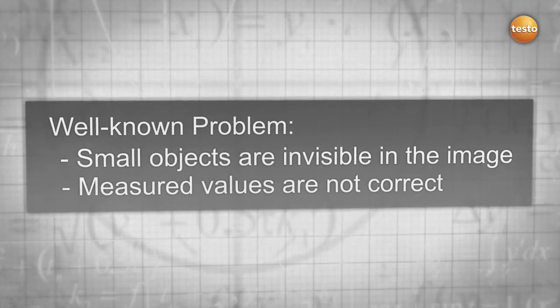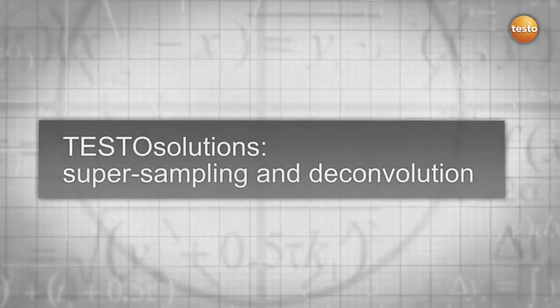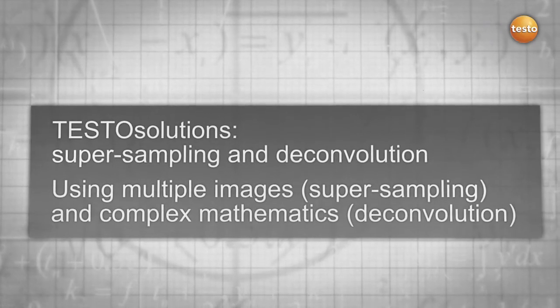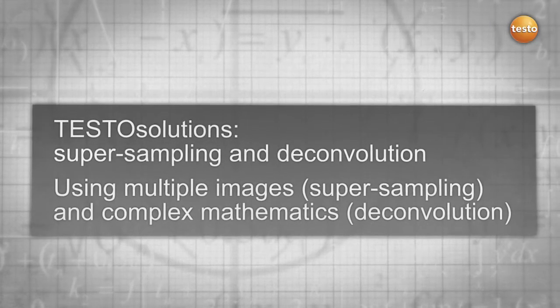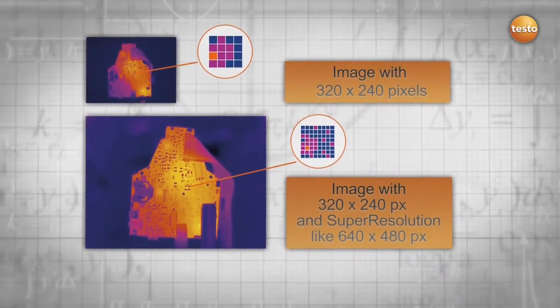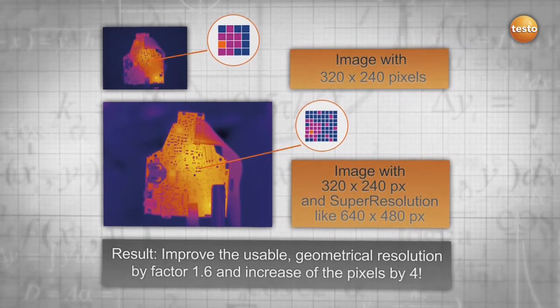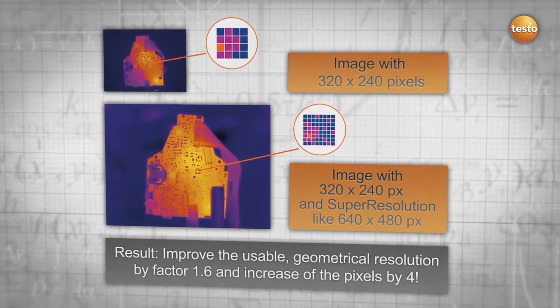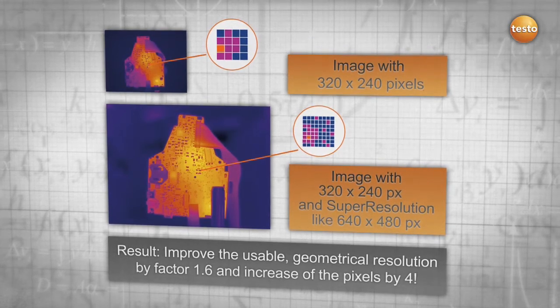By using multiple images, super sampling, and complex mathematics deconvolution, you get more information out of your thermal images. Your result: an improvement of the geometrical resolution by 1.6 and an increase in your pixels by 4 for more details and safety.